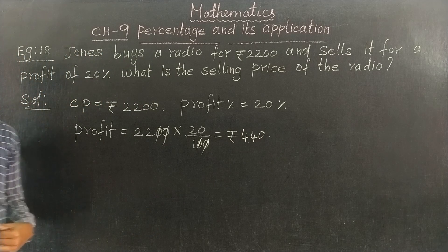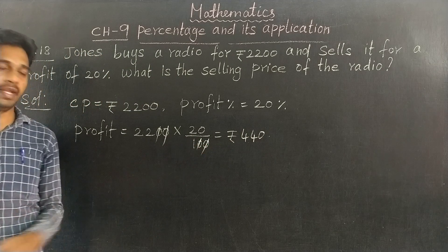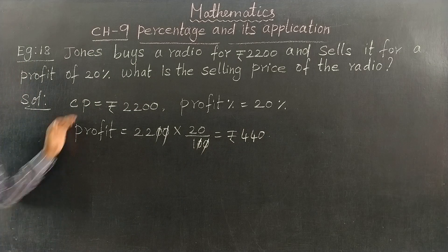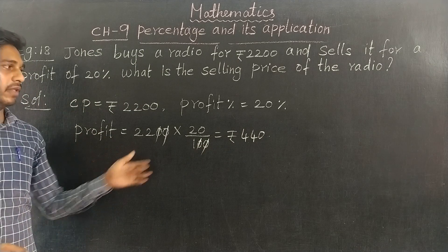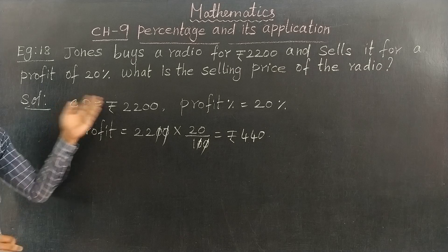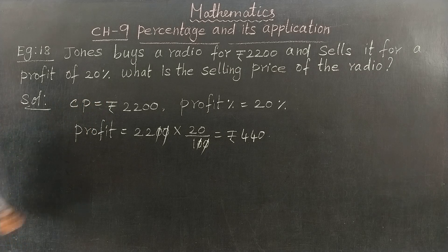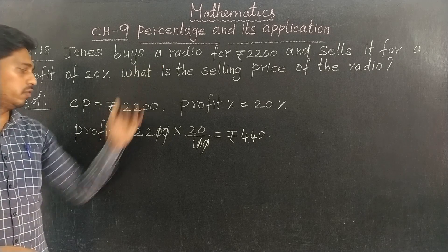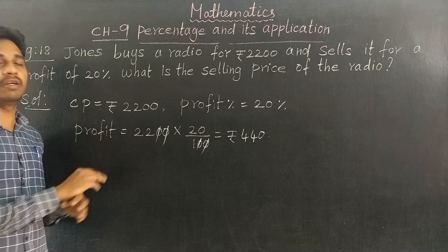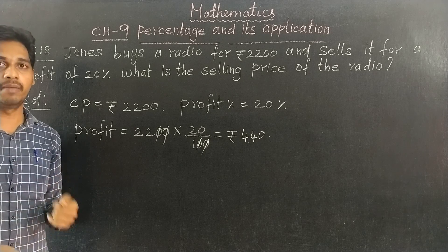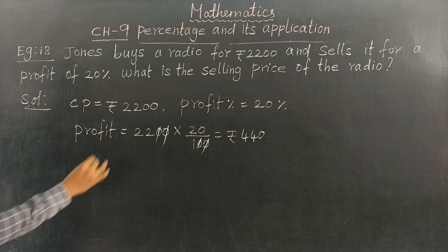440. Profit amount is 440. To get the selling price, add profit to cost price.